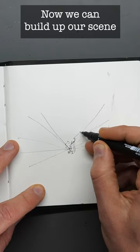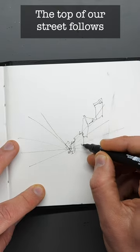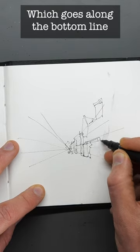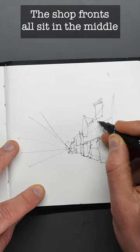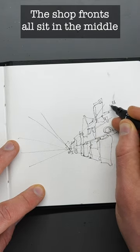Once we've got these lines we can use them to build our scene. So look how the top of all these houses are going along that top line. Now we come to the bottom of the street and the bottom is going along the bottom line, whilst the middle of the street, if you look at those sort of shop fronts, they're all going along another line as well.